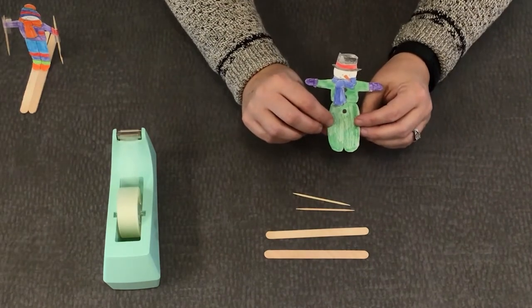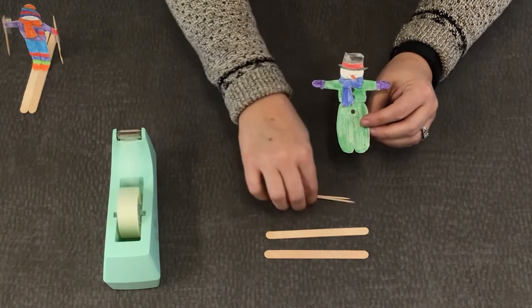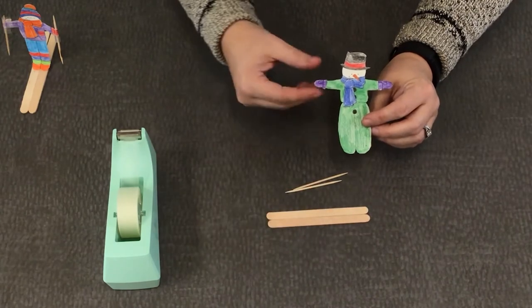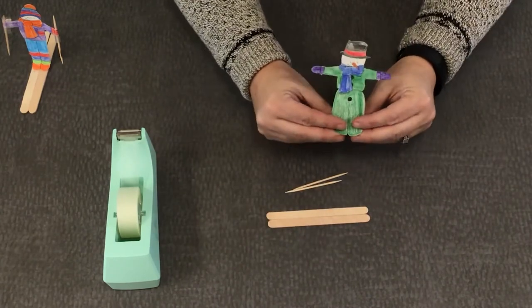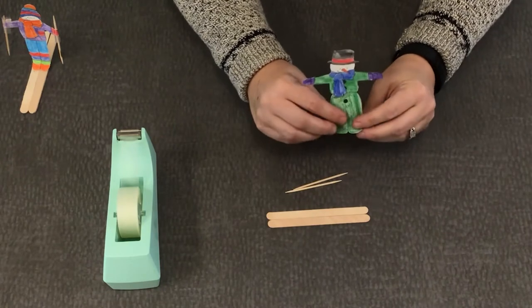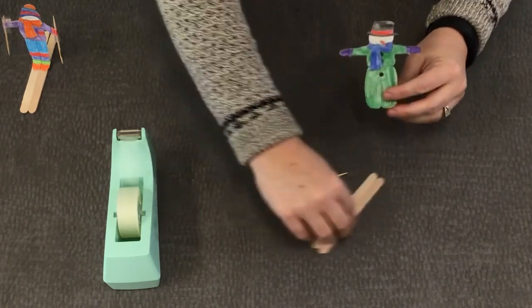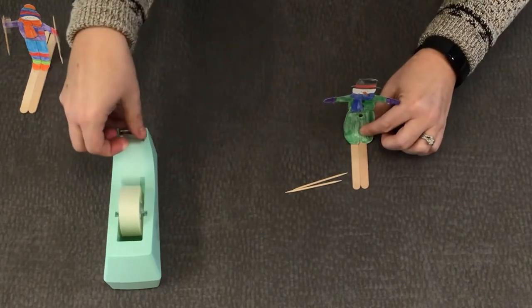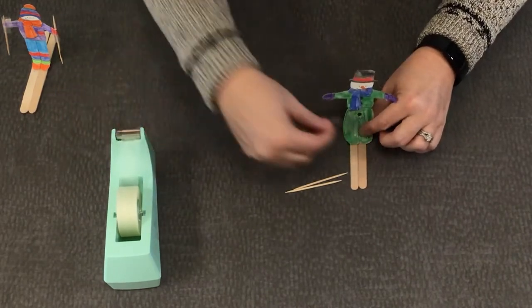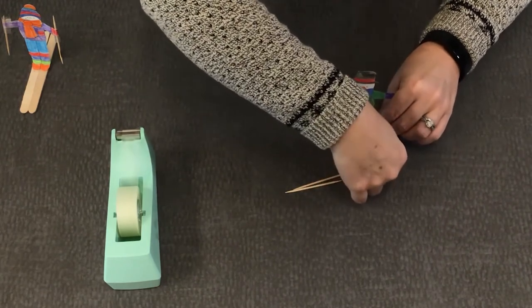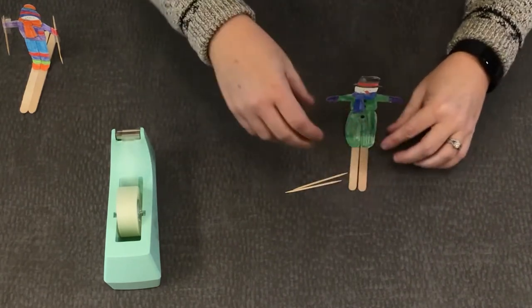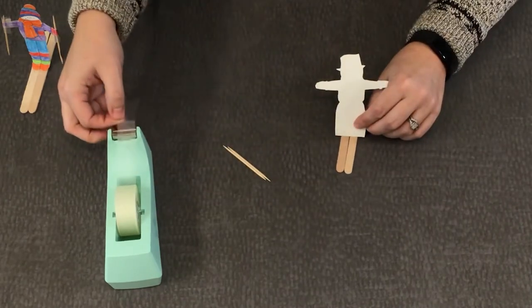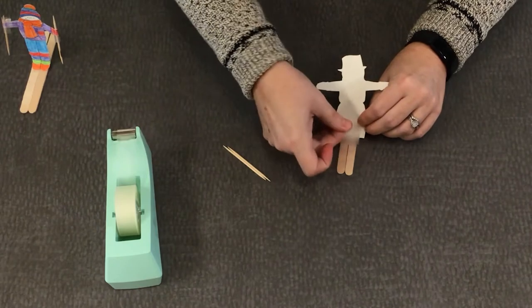To attach the skis, you bend the bottom of the skier and you attach the craft sticks or skis just with some tape on the front. Then what I'd like to do is do another piece of tape on the back so that it's good and secure.